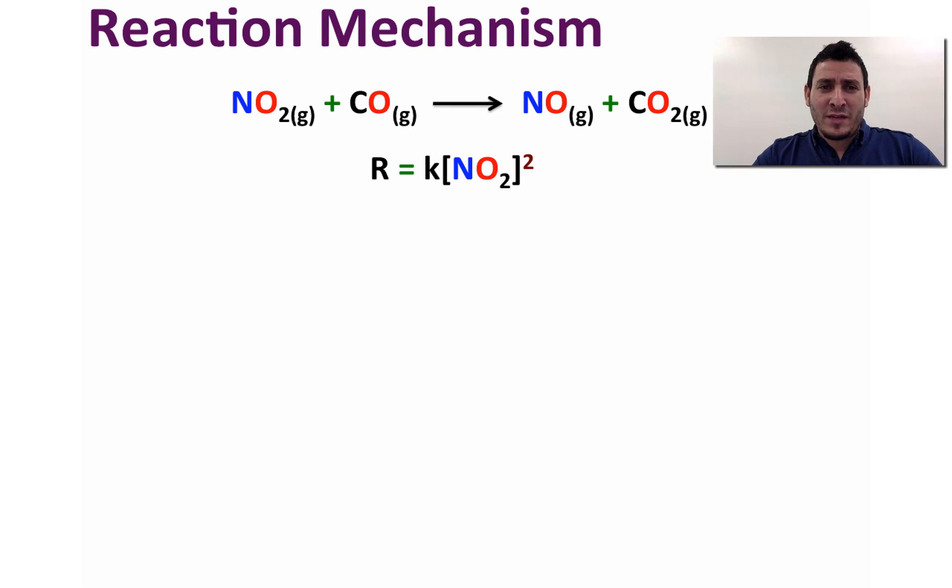Now consider the following reaction between nitrogen dioxide and carbon monoxide. The differential rate law was determined experimentally to be R equals K multiplied by the concentration of NO2 to the power of 2. So we can conclude that this reaction is second order in NO2 and zero order in CO.